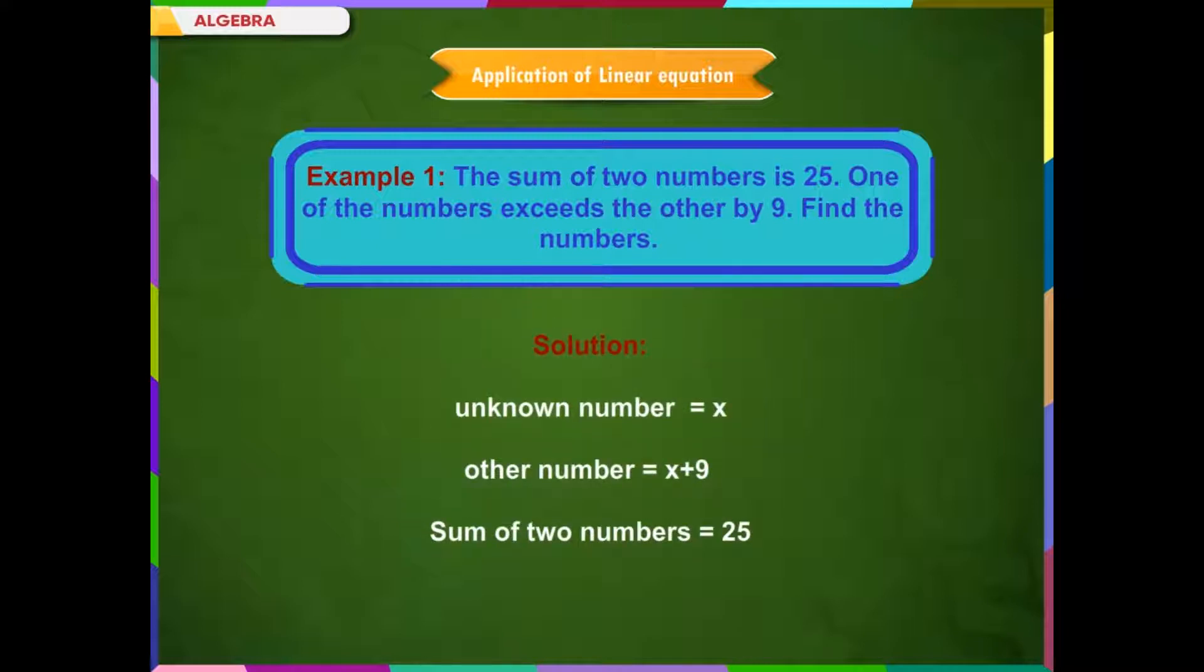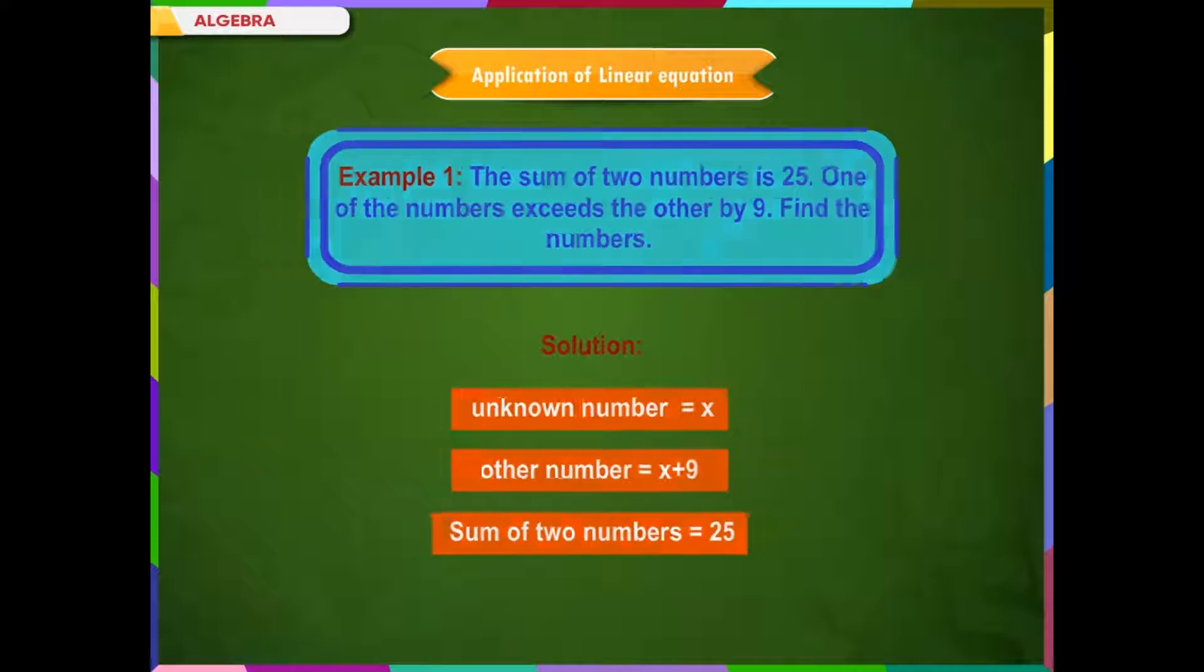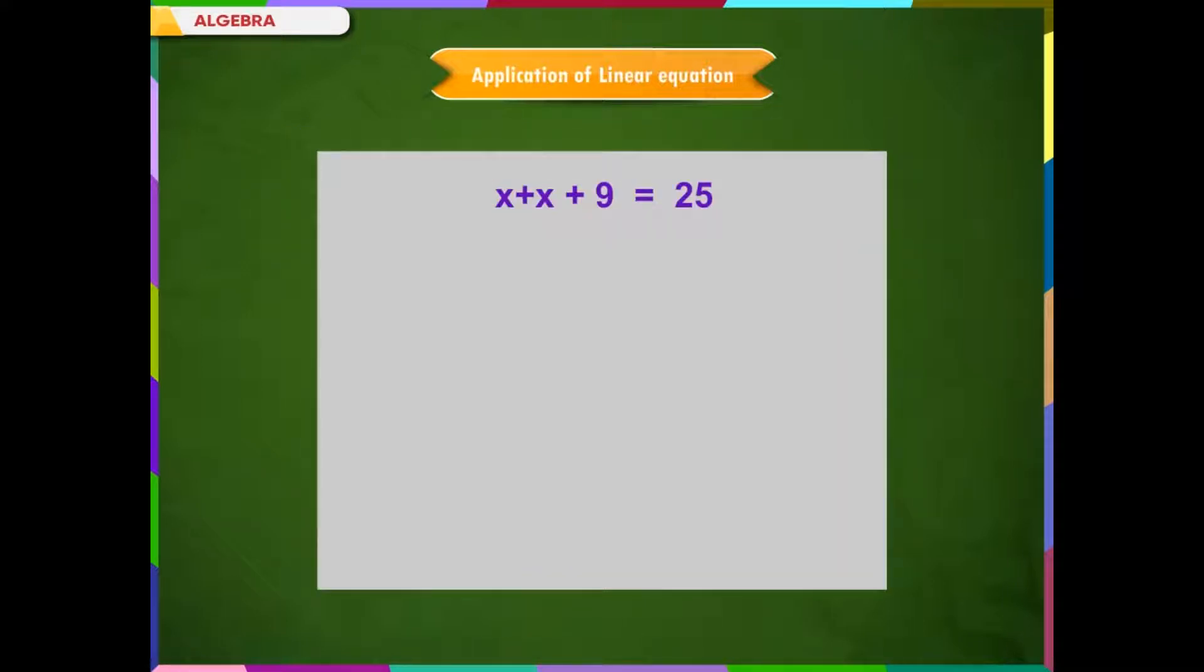Solution. Let the unknown number be x. Then, the other number is equal to x plus 9. As it is given that the sum of two numbers is equal to 25. Therefore,